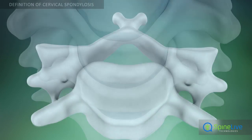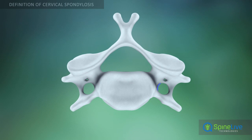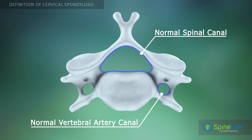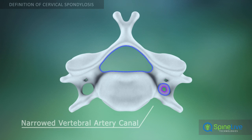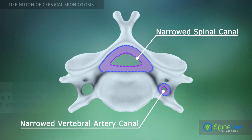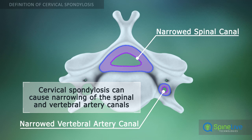Cervical spondylosis causes narrowing of the vertebral artery canal and spinal canal, which compresses vessels and nerve structures. These changes can cause neurological symptoms.